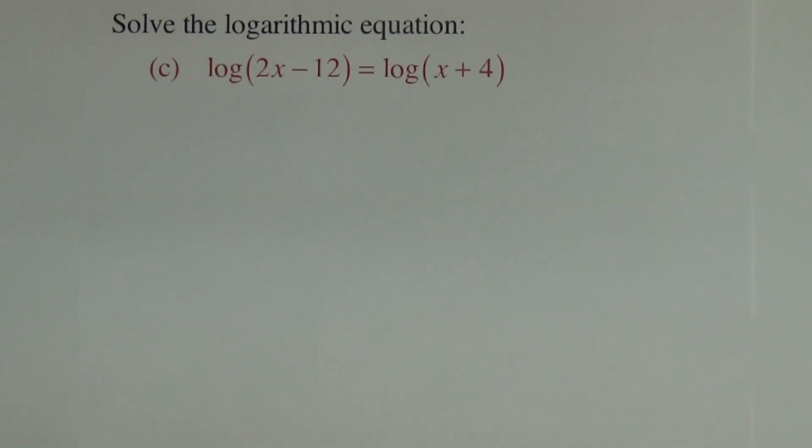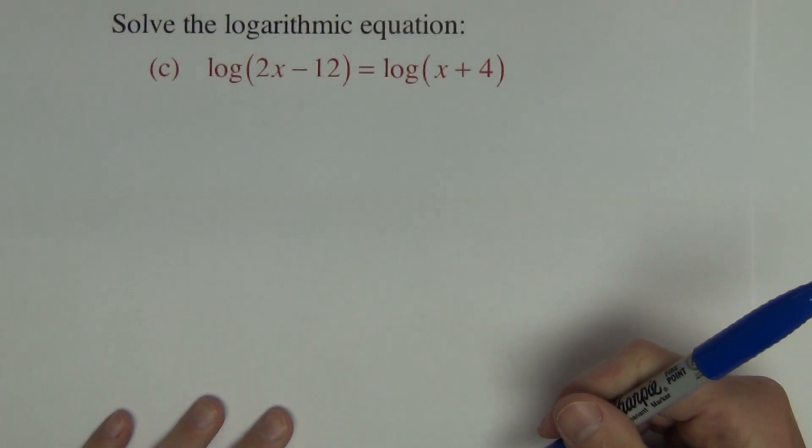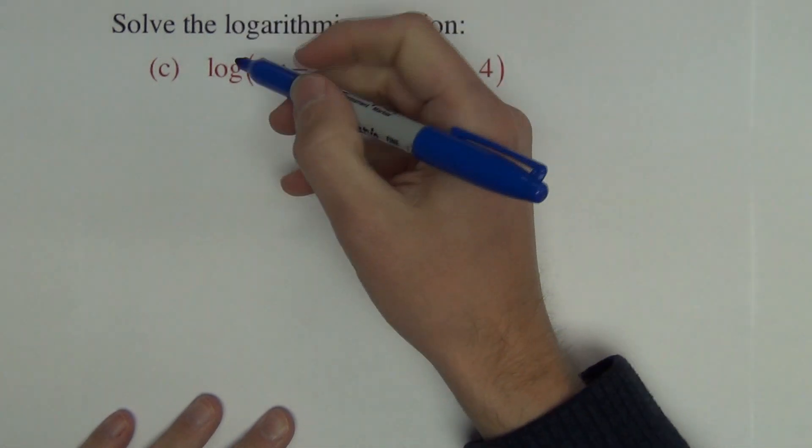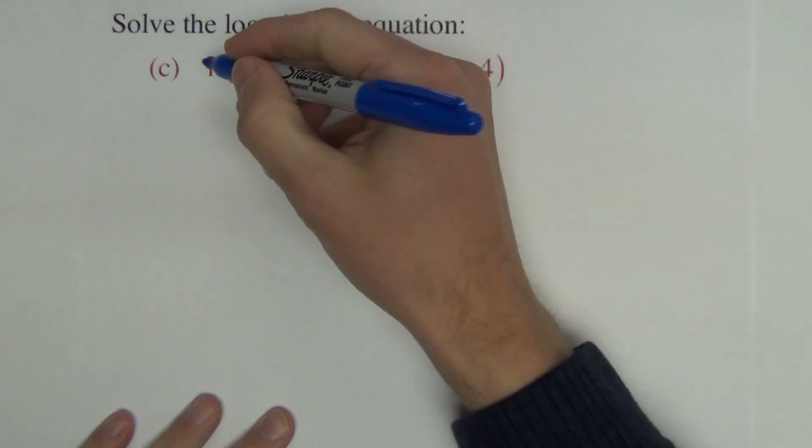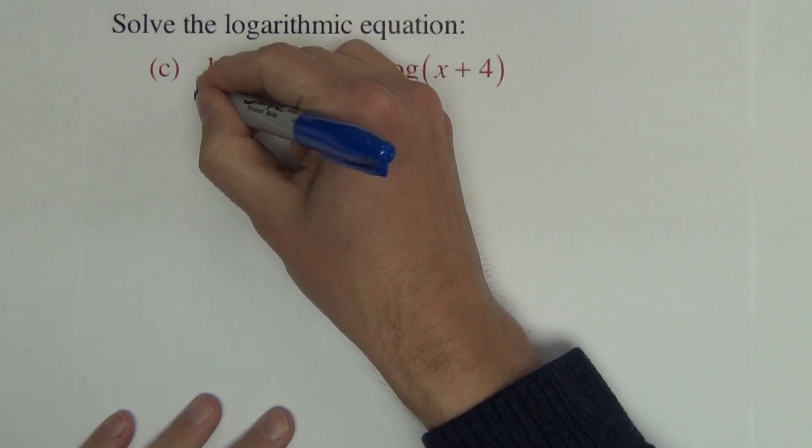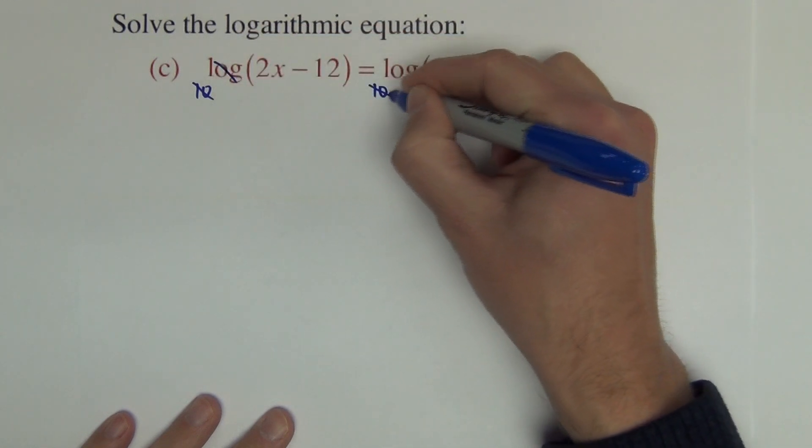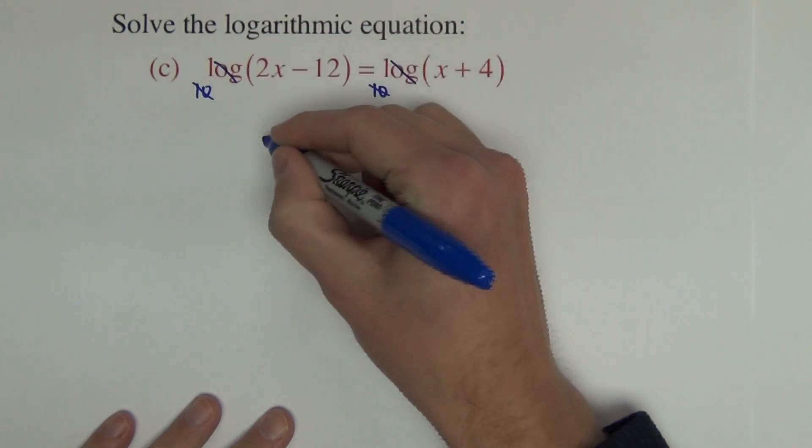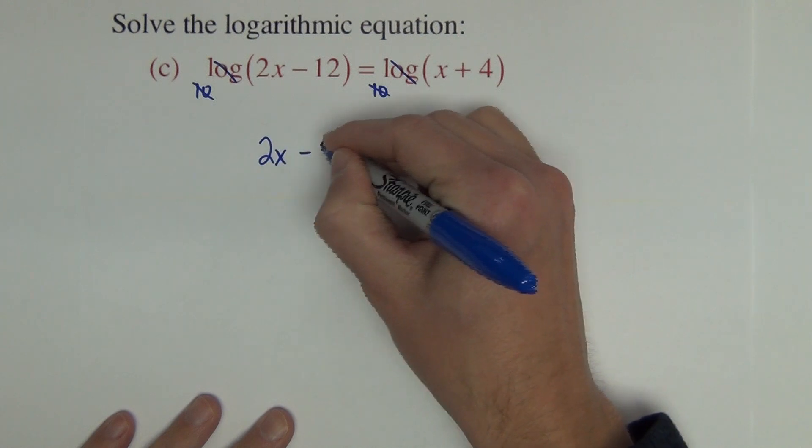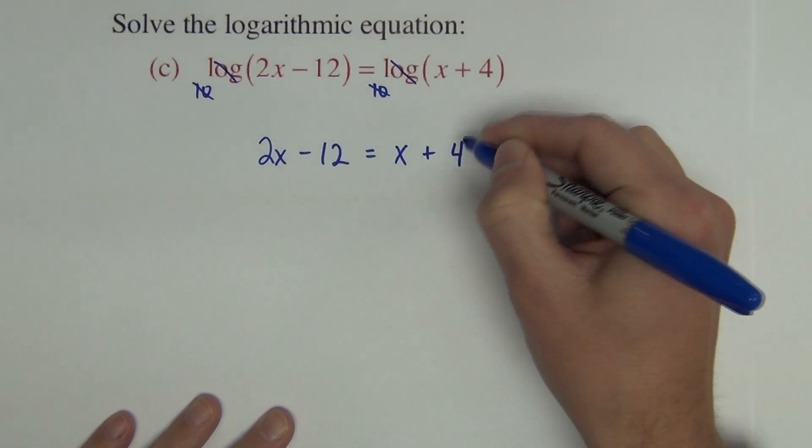Last logarithmic equation. Here I'm giving you one where you have a logarithm on both sides of the equation. And when that happens, since the bases are the same, essentially you can just cross them out and ignore them. Since they're log base 10, we put a 10 under the one on the left side, a 10 under the one on the right side. So there we're showing that it crosses out. We get 2x minus 12 equals x plus 4.